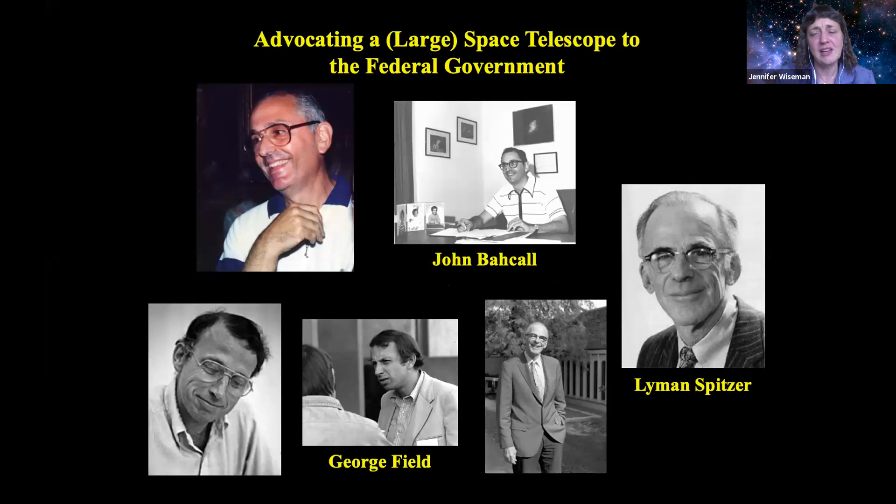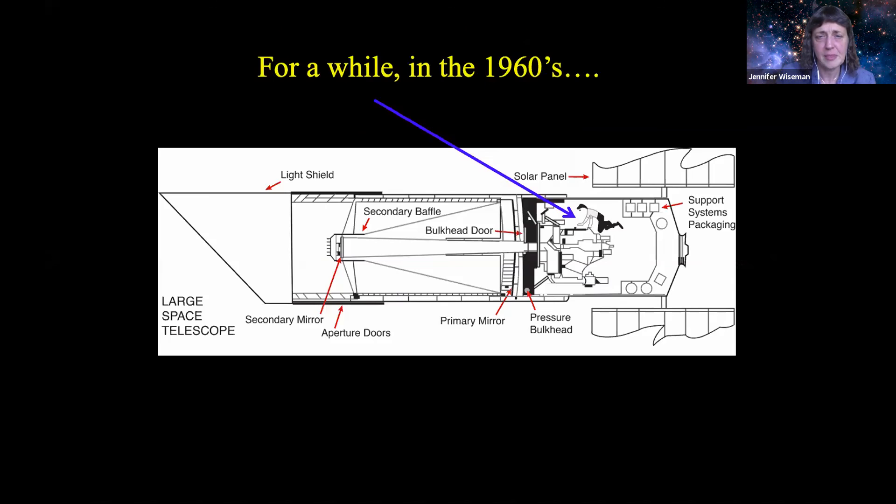There were, of course, many other champions along the way who advocated for the idea of supporting a large space telescope, particularly to the federal government and the taxpayers. These included not only Lyman Spitzer himself, but John Bahcall and George Field, and as well as quite a few other champions for the cause. Now, what that telescope might actually look like varied over the years as the concept became more mature and in early concepts back in the 1960s, the idea was that the astronomer would actually travel up to the orbiting space telescope and do the observations in person.